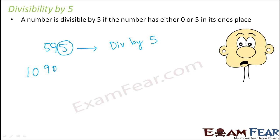Let's say we have a number like 109000. This number has 0 in its units place, therefore this number is also divisible by 5.